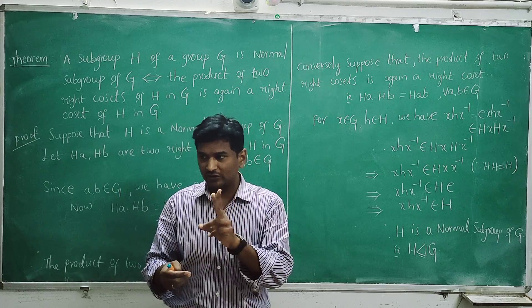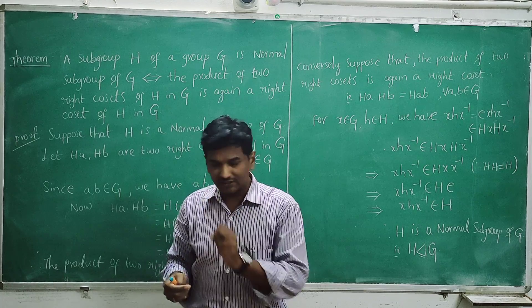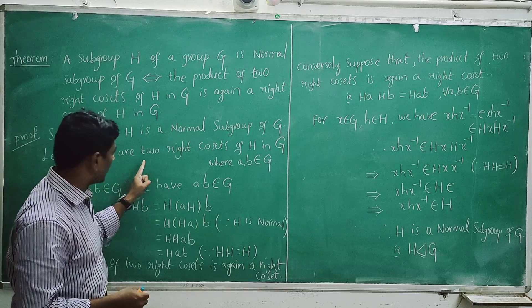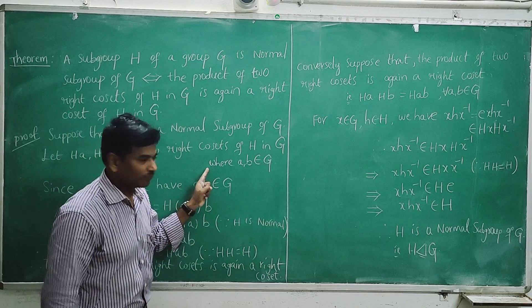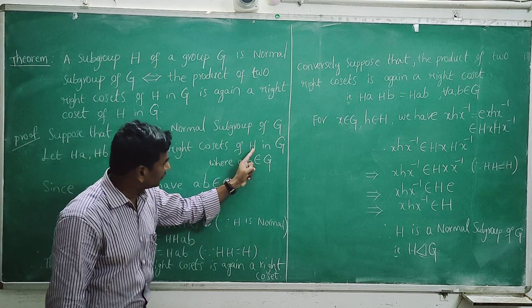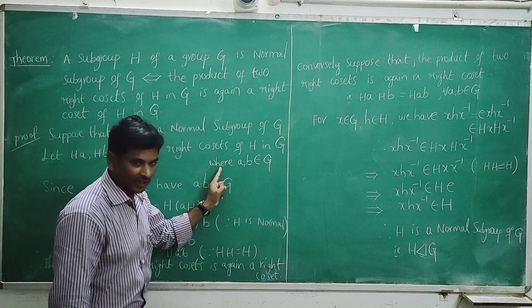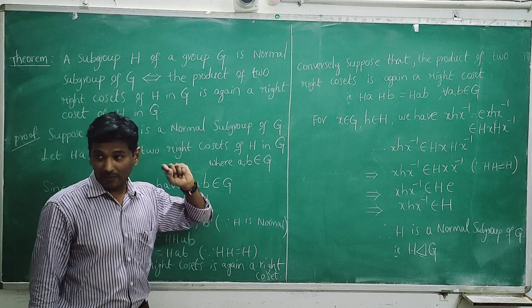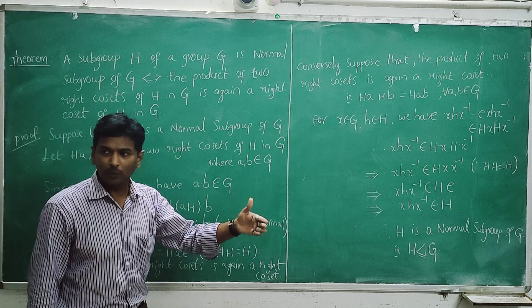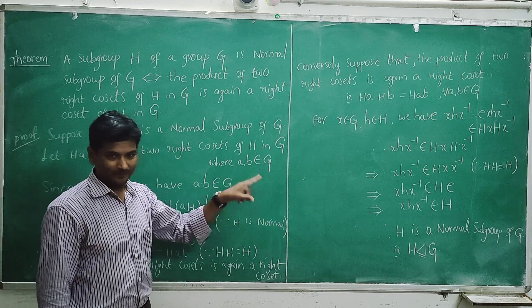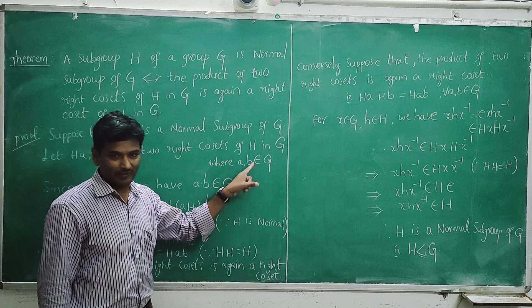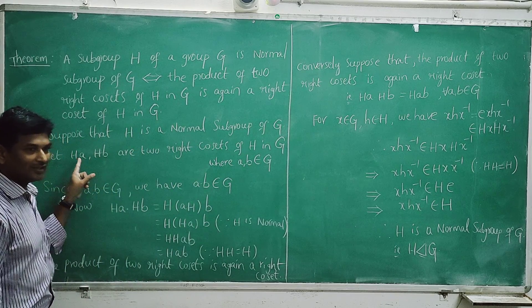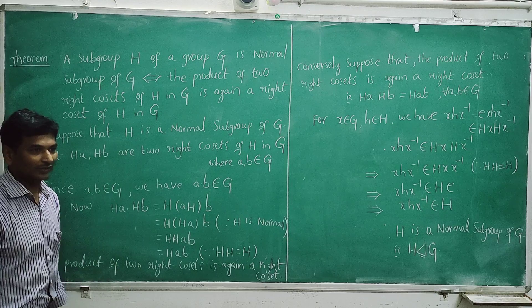We can take any two right cosets, that is Ha and Hb, which are two right cosets of H in G. For elements x, y belonging to G, Hx and Hy are two right cosets.